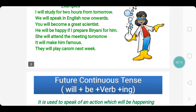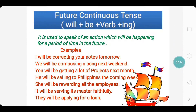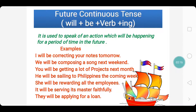Let us move to Future Continuous Tense. When do we use Future Continuous Tense? It is used to speak of an action which will be happening for a period of time in the future — for a little span of time, this action is going to be happening. Such actions are written in Future Continuous Tense. Now look at the verb form here.